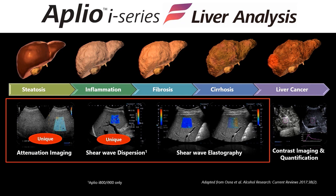Shear wave dispersion, Canon's unique enhancement of conventional shear wave, displays and quantifies the shear wave dispersion slope, which is related to liver viscosity. Recent studies suggest that the dispersion slope can help provide a quantitative non-invasive assessment of lobular inflammation in patients with NAFLD and NASH. Last but not least is our attenuation imaging, which is a reliable and accurate tool for the assessment of hepatic steatosis. It's well understood that a fatty liver is more attenuating, and now clinicians have an imaging method to detect and quantify attenuation in patients with steatosis.